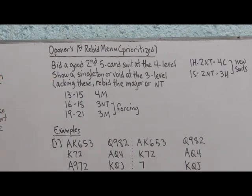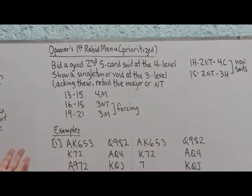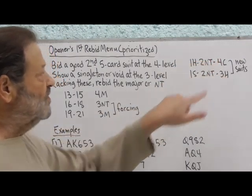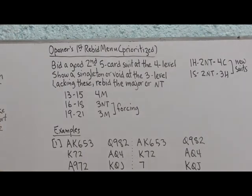Now, if I don't have a good second suit to show, if I have shortness, now's the time to show it. So if I have a singleton or void, I show that at the three-level. For example, one spade, two-no-trump alert, that's a Jacoby-two-no-trump. Opener now bids three hearts, opener showing a heart singleton or void. Notice that these are new suits. A new suit at the four-level shows a second suit. A new suit at the three-level shows shortness.